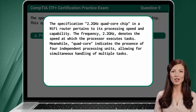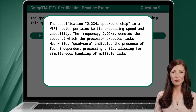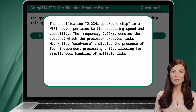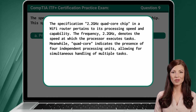The specification of a 2.2 GHz quad-core chip in a Wi-Fi router pertains to its processing speed and capability. The frequency, 2.2 GHz, denotes the speed at which the processor executes tasks. Meanwhile, quad-core indicates the presence of four independent processing units, allowing for simultaneous handling of multiple tasks.